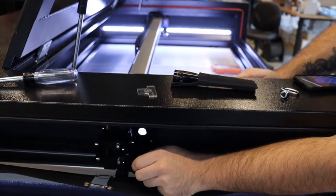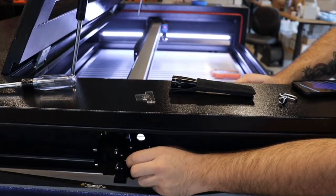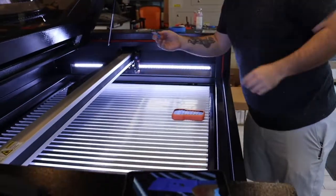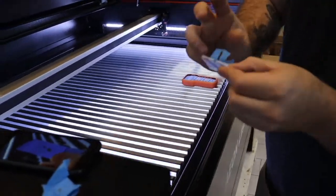With the top knob, clockwise will move the beam right and counterclockwise will move the beam left. The bottom knob, clockwise will move the beam up and counterclockwise will move the beam down.